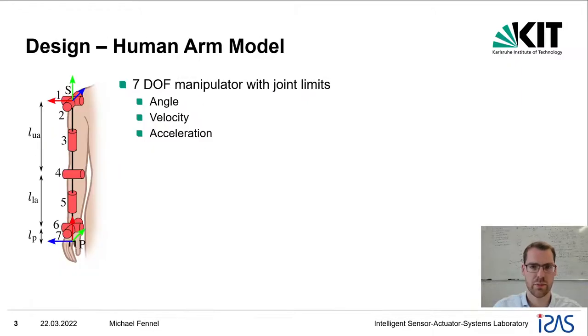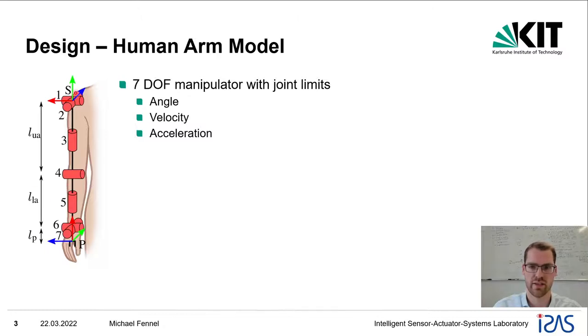To come up with a manipulator design based on this fact, we first modeled the human arm as a serial manipulator with seven joints, taking into account angle limits as well as velocity and acceleration limits.